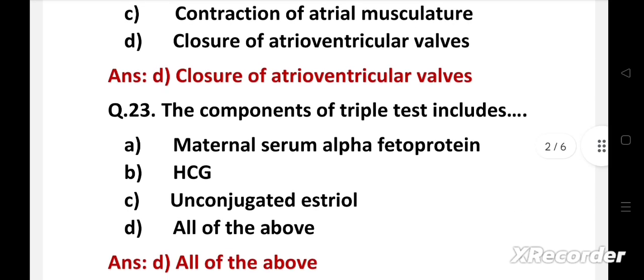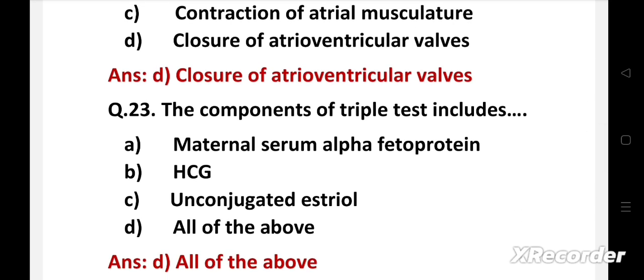Right answer is option D: all of the above. All of the above mentioned are the components of triple screening which help us to find out Down syndrome, neural tube defect, and other chromosomal abnormality present in the fetus. It is performed between 15 and 18 weeks of gestation.